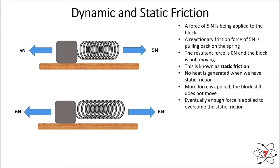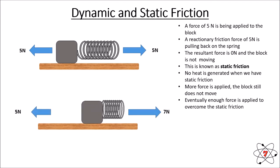Eventually, if we apply enough force we will exceed what static friction provides. If we apply seven newtons to our spring, that may be greater than the static friction — meaning the force applied to the block can move it, because it is now greater than the force of friction, and we no longer have balanced forces.